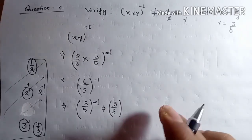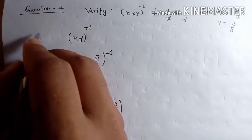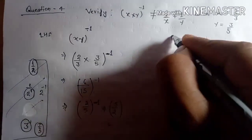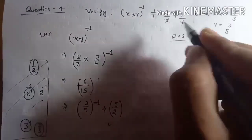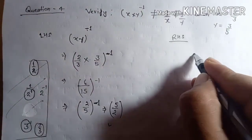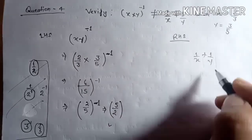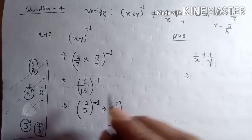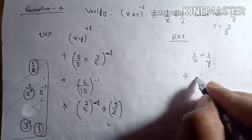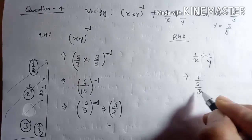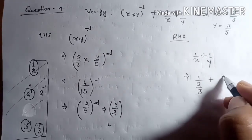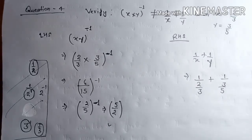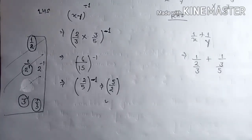This is the left hand side result — LHS equals 5 upon 2. Now check the right hand side. The right hand side is 1 upon x plus 1 upon y, which gives us 1 upon 2 upon 3, plus 1 upon 3 upon 5.